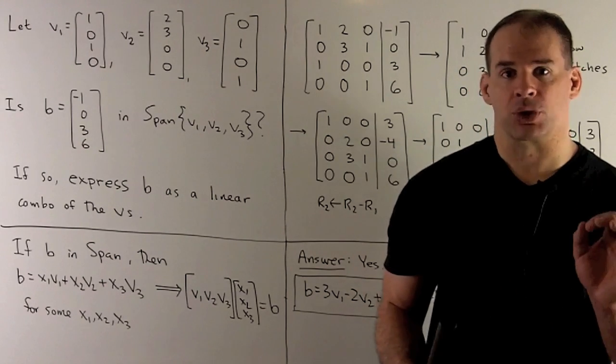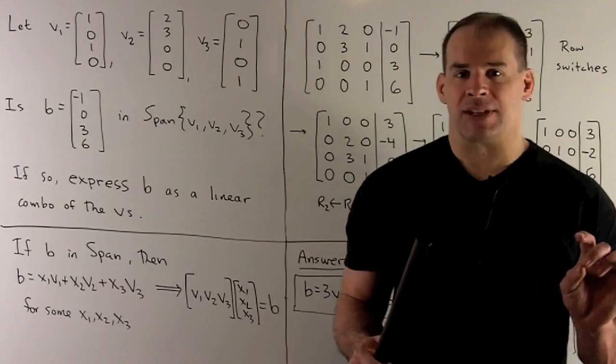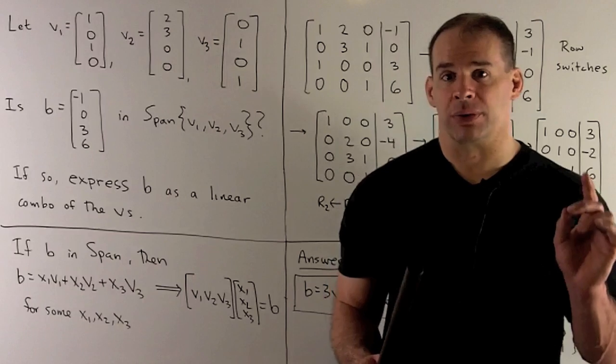Now, to answer the first question, the span of v1, v2, and v3 is going to be all linear combinations of our three vectors.